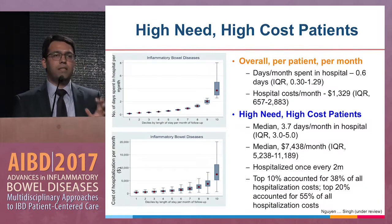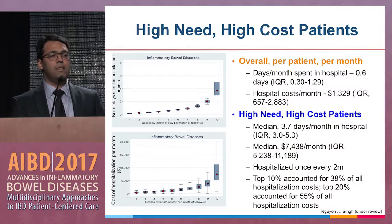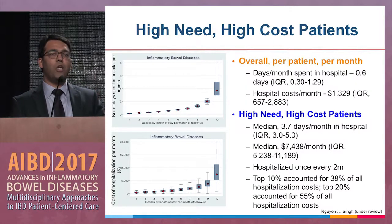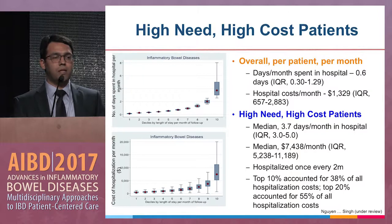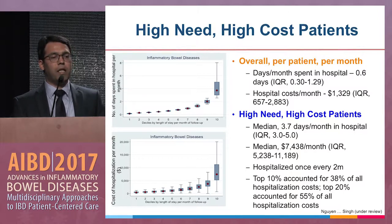Looking specifically at the costs of hospitalization-related care, this was a study using the Nationwide Readmissions Database where we longitudinally tracked patients for one year. Overall, patients with IBD are hospitalized about 0.6 days every month, which translates to about six or seven days every year, with a monthly cost of about $1,300.